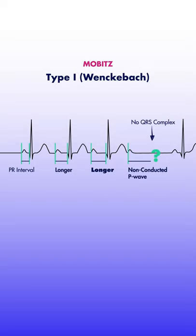You could think of this progressive lengthening PR interval as a warning, or a hint that this may be a type 1 second degree AV block.